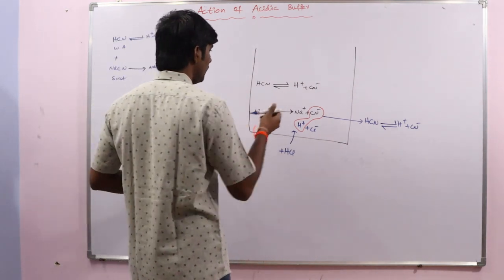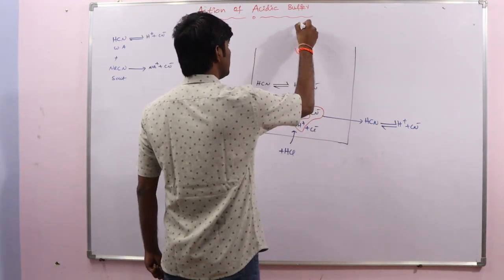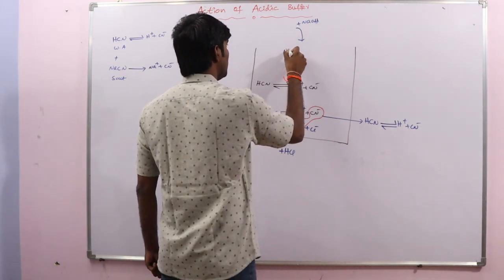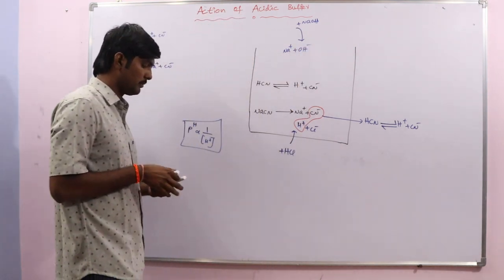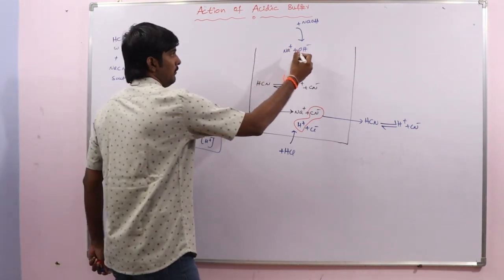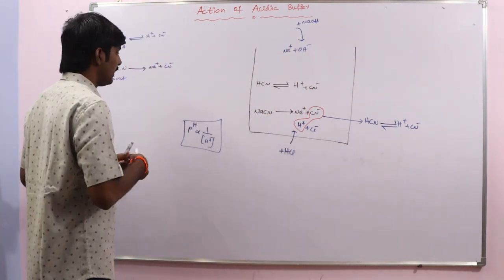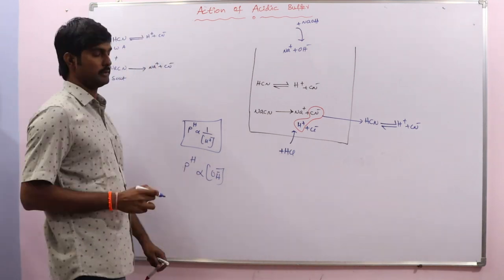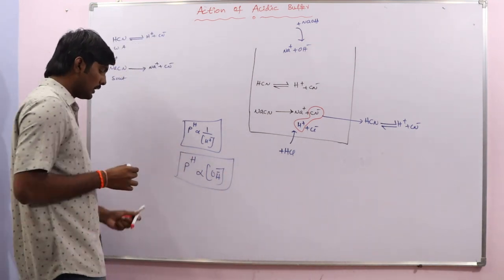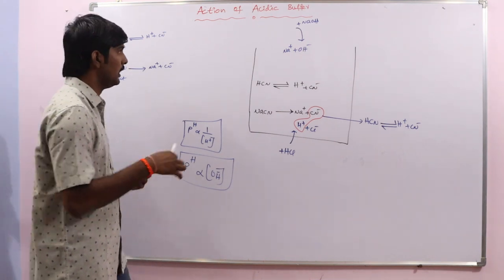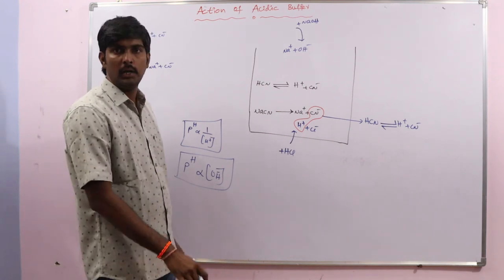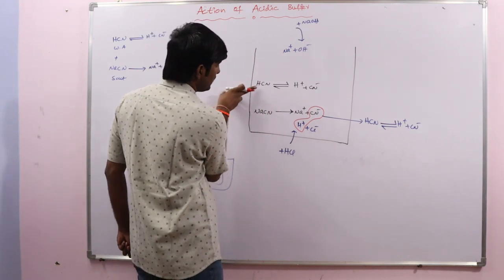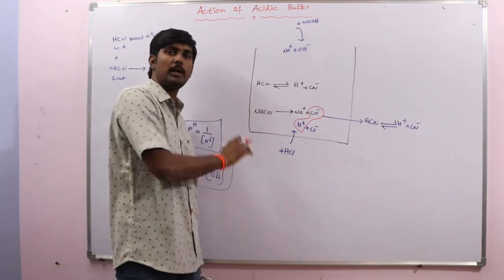Next, let us assume we are adding a strong base, NaOH, to this buffer solution. NaOH dissociates into Na⁺ and OH⁻. We know that pH is directly proportional to the concentration of OH⁻ ions, so when OH⁻ ion concentration increases, pH should increase. But we already discussed that the acid HCN is almost undissociated due to the common ion effect.